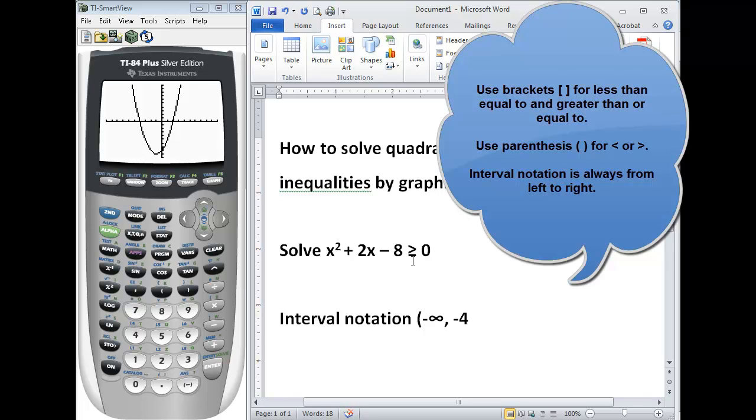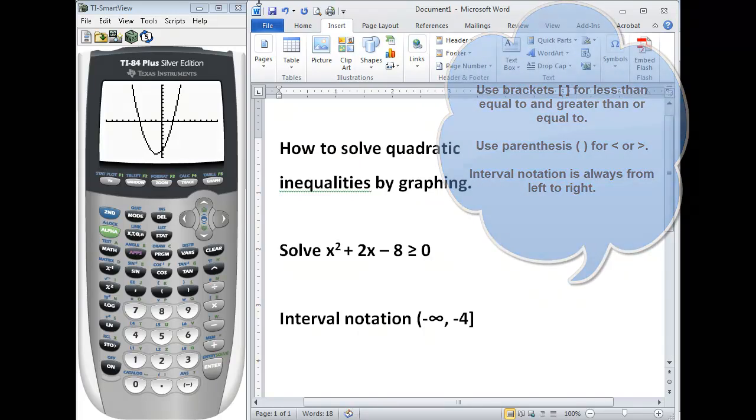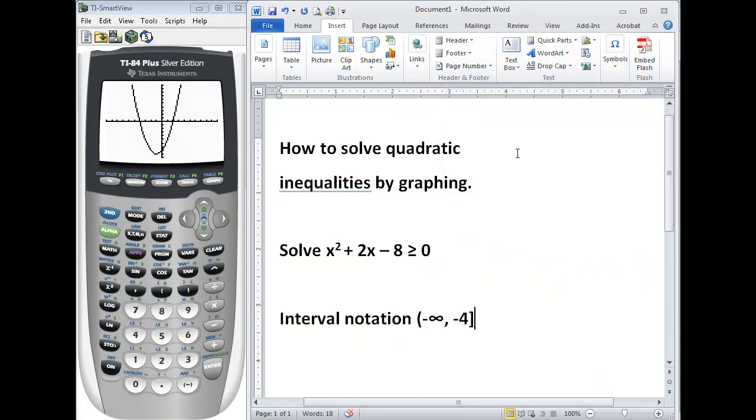Since we can actually equal 0, we use a bracket to symbolize that -4 is included in our solution. We use the symbol U, standing for union.